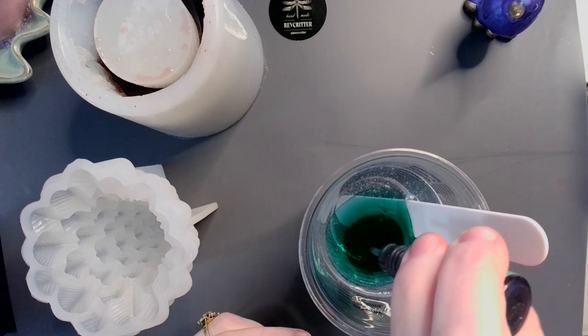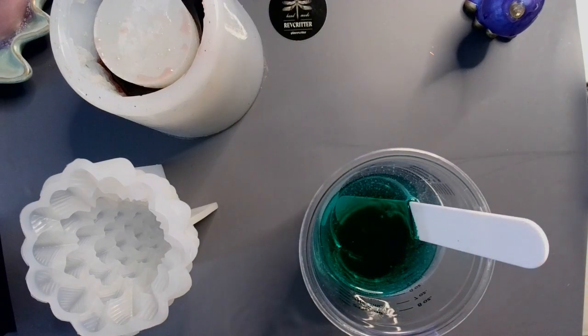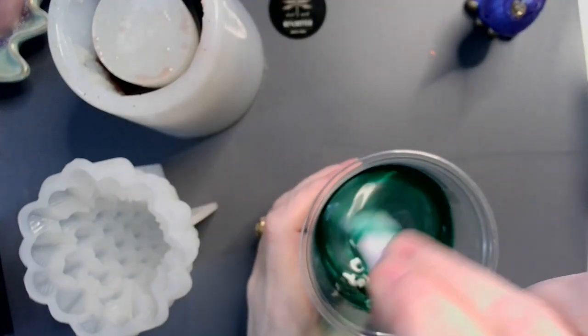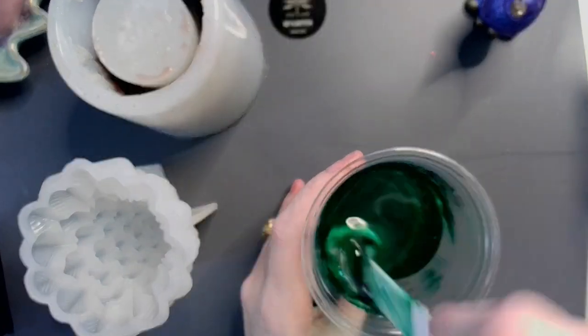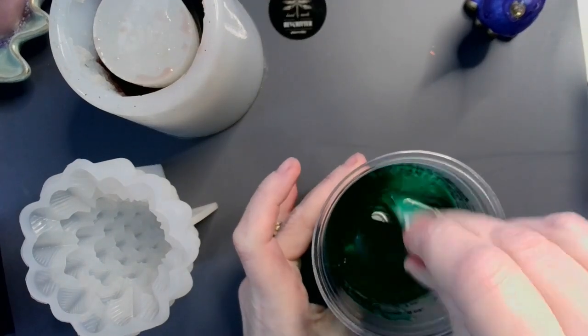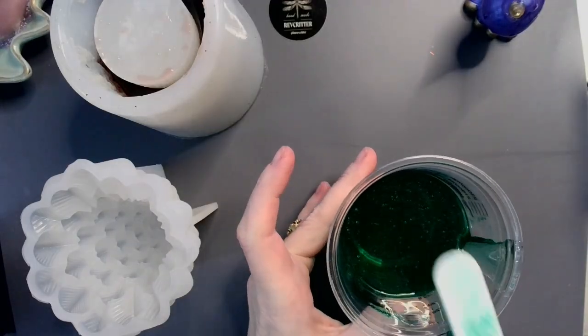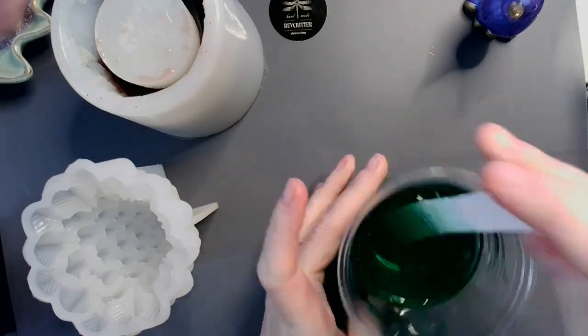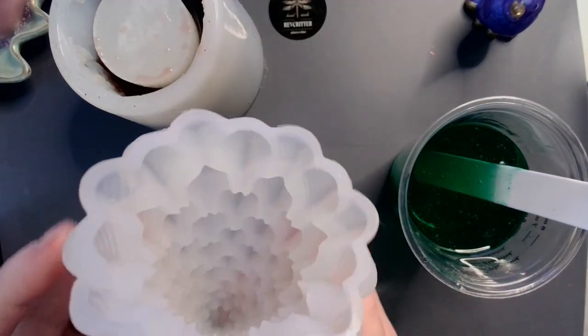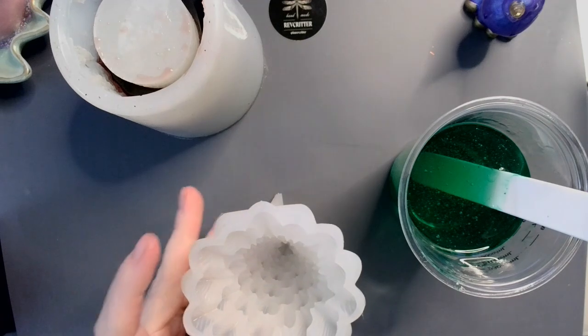So I have six ounces of resin here and my bright green alcohol ink. All the green. Now you'll notice this tree has lots of little tiny compartments, little tree leaves.